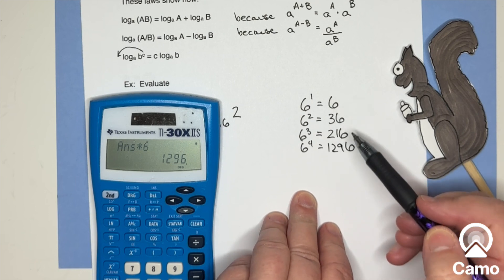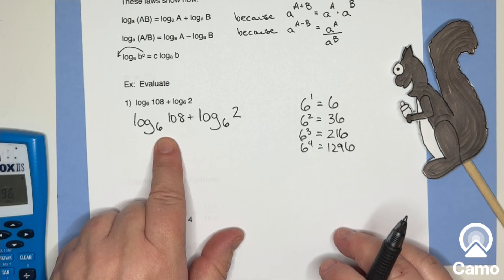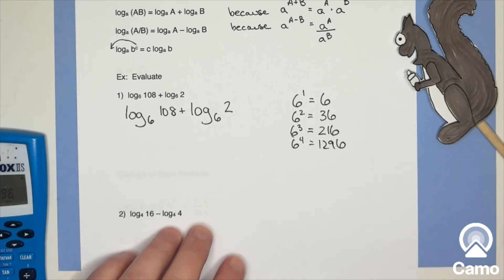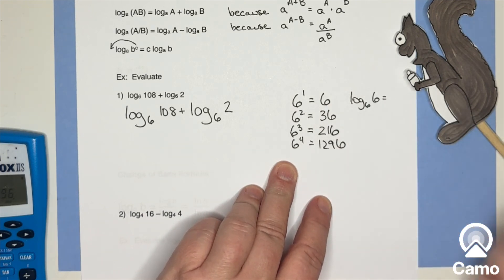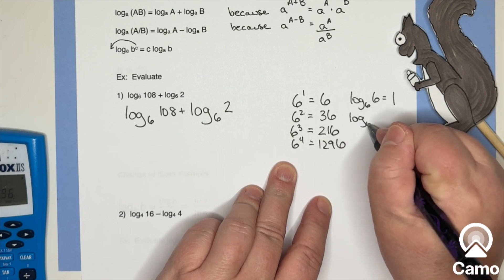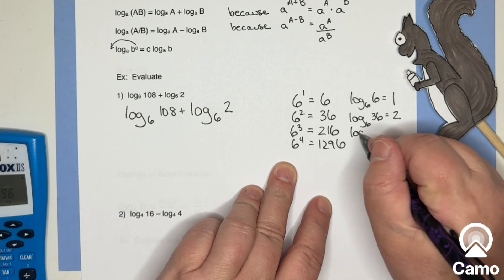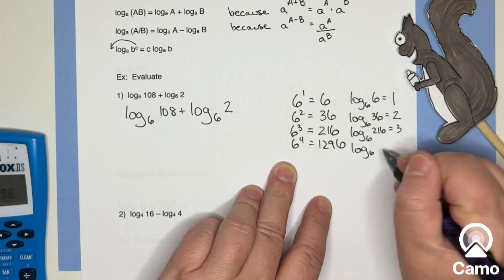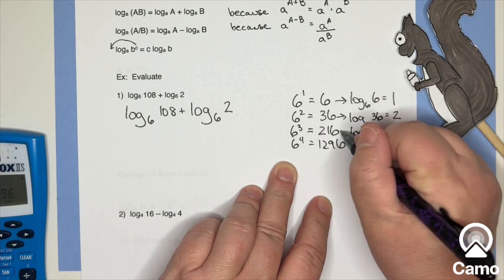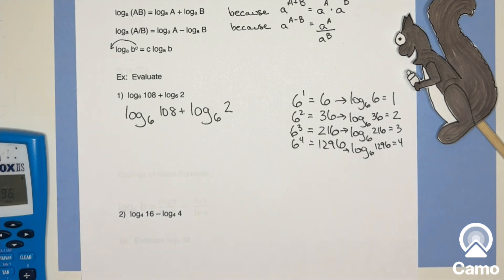So these are the numbers that are going to be easy to work with, with logarithms. Right? Because log base six of six is how many sixes in that? One. You got it. Log base six of 36, because that's six squared is two. Log base six of 216, three. Log base six of 1296 is four. Right? So basically, if you know your powers of six, you can work out your logarithms base six.